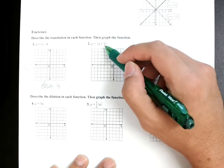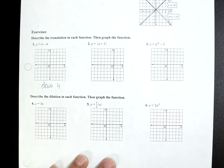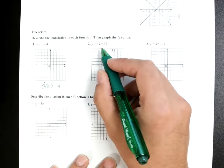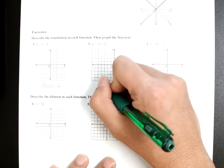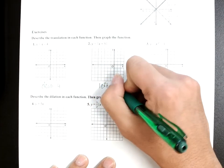Now, look at 2. The 5 is inside the absolute value. So, you do the opposite. So, if it's a plus 5, you're going to go to the left 5.